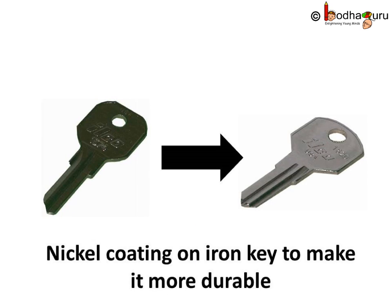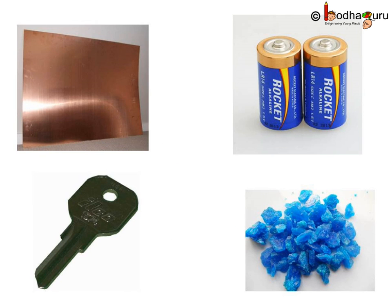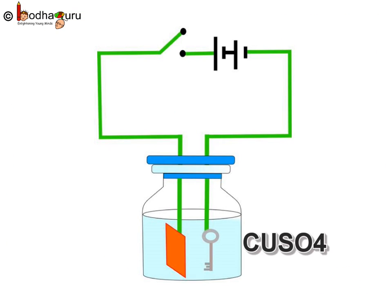Here, we have an iron key. If we coat it with another metal like copper or nickel, which doesn't get rust, we can use the key for a long time. To deposit copper on iron, we need a small copper plate or piece, an electrolyte which is a copper compound like copper sulphate, 2 to 3 cells for electricity supply, and some electric wires. First, we make copper sulphate solution.